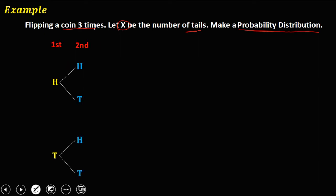On the third flip, the same — head and tail, head or tail, head or tail, and head or tail. Using this illustration, we can easily identify the different outcomes of this experiment.